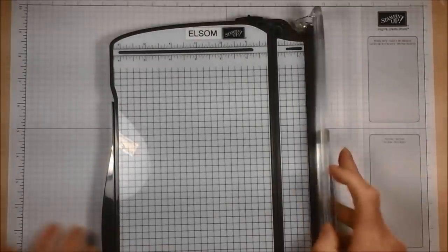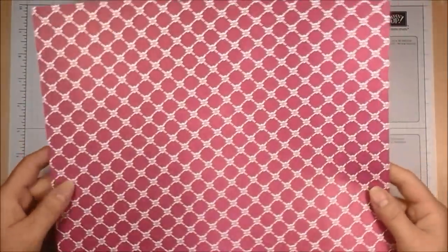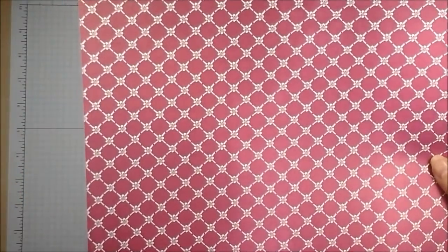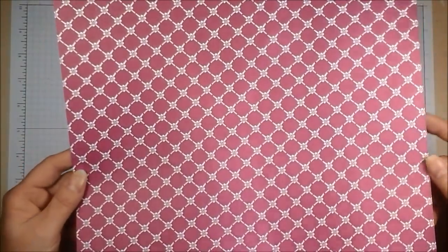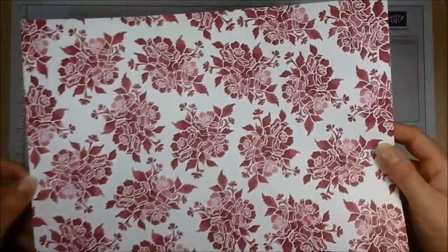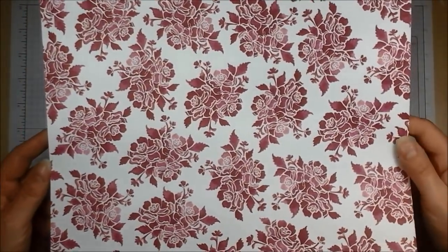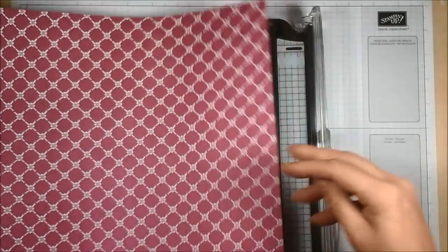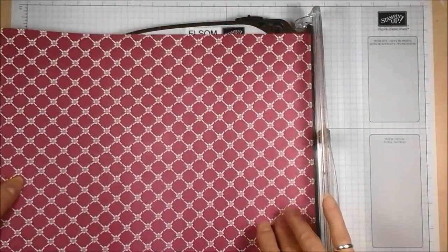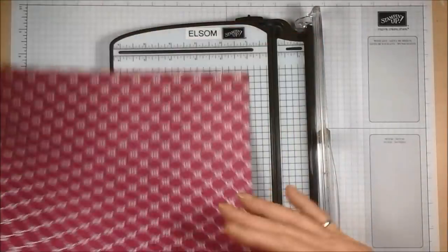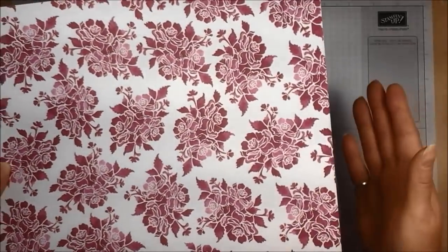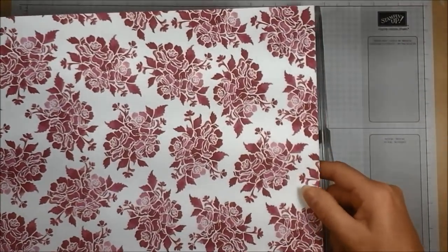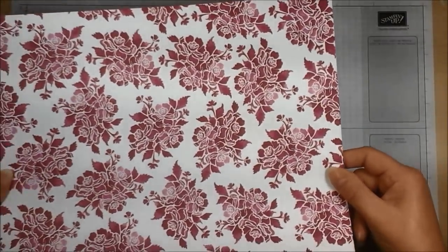It's really simple. I have here a piece of 12 by 12 paper. It's from the fresh florals designer series paper stack. It's double-sided as most of Stampin' Up's designer series paper is. I've specifically chosen a paper that doesn't have any kind of direction to it so that when I fold part of it over we don't end up with an upside down design.